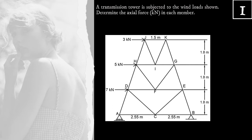First, we determine the support reactions. For the roller support at A, the reaction has one component, and it is normal or perpendicular to the support. Let's call this RA. For the hinge support at B, it has two components: a vertical component, By, and a horizontal component, Bx.